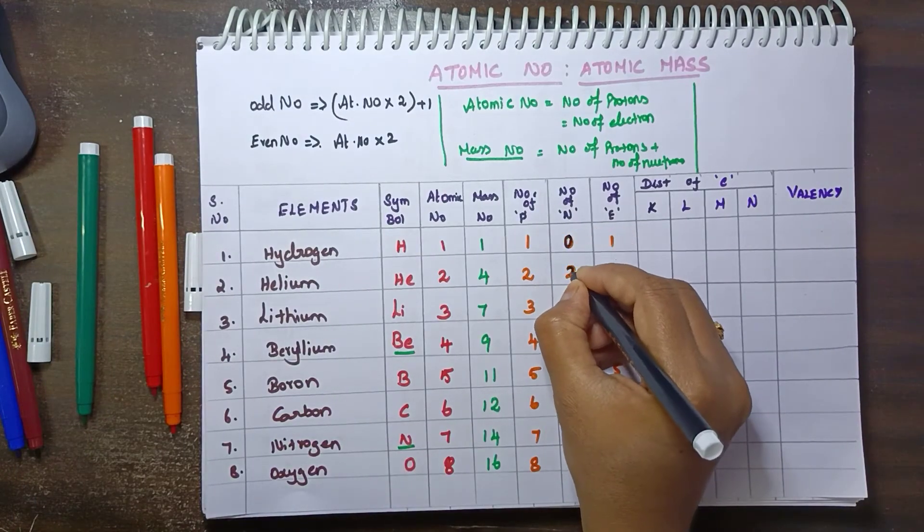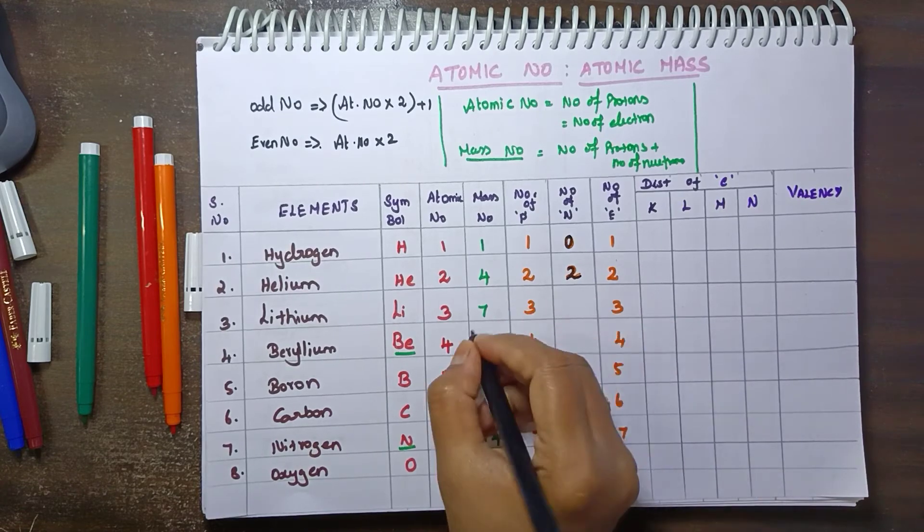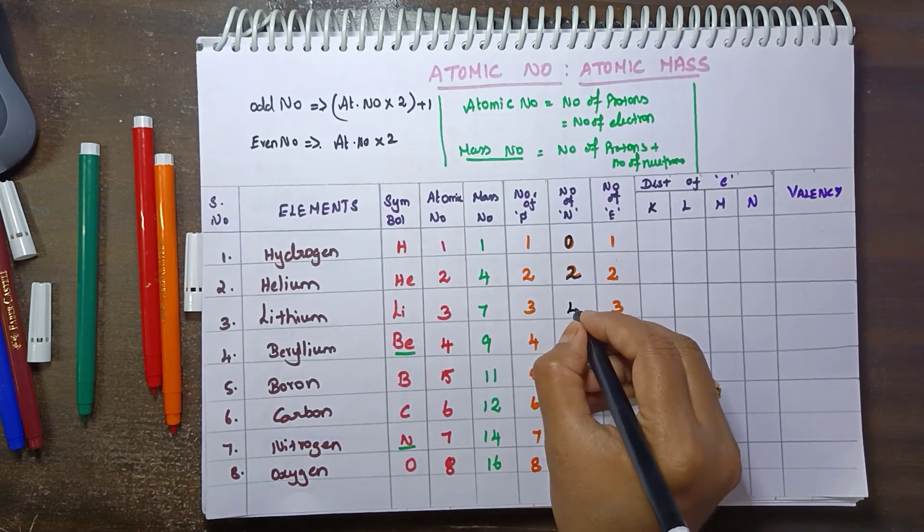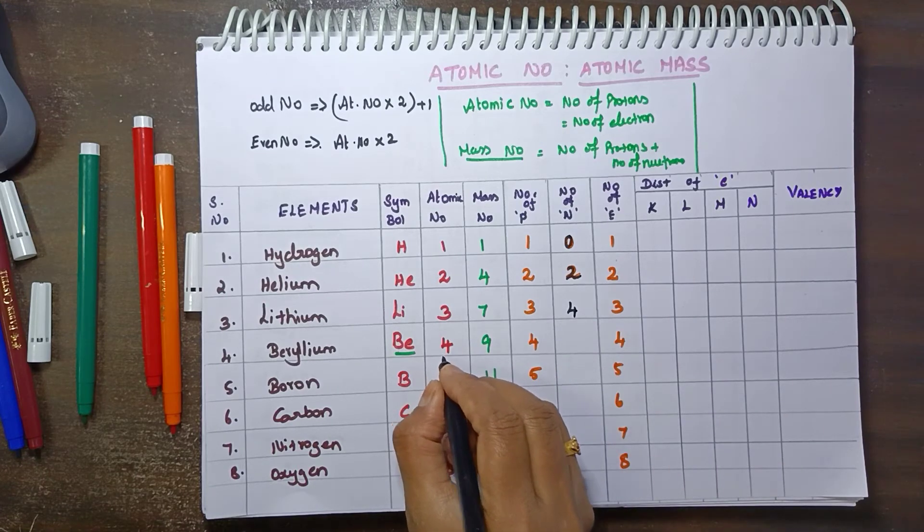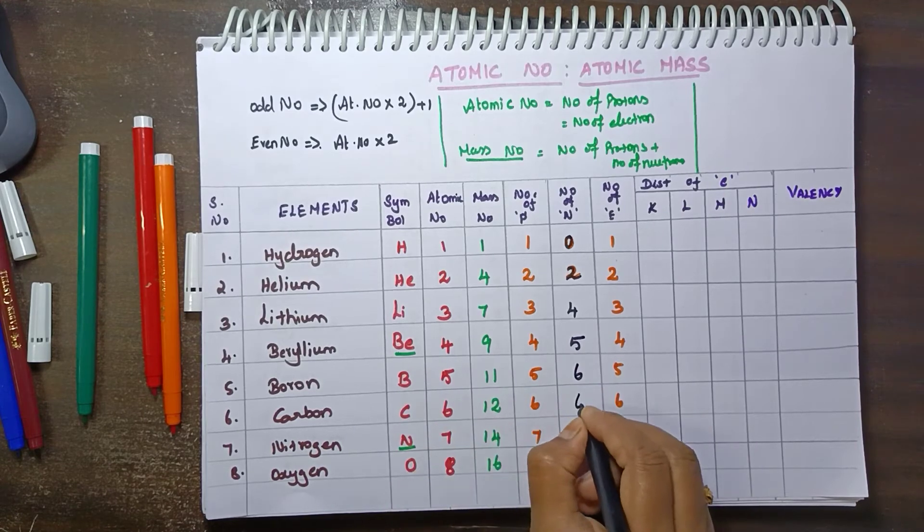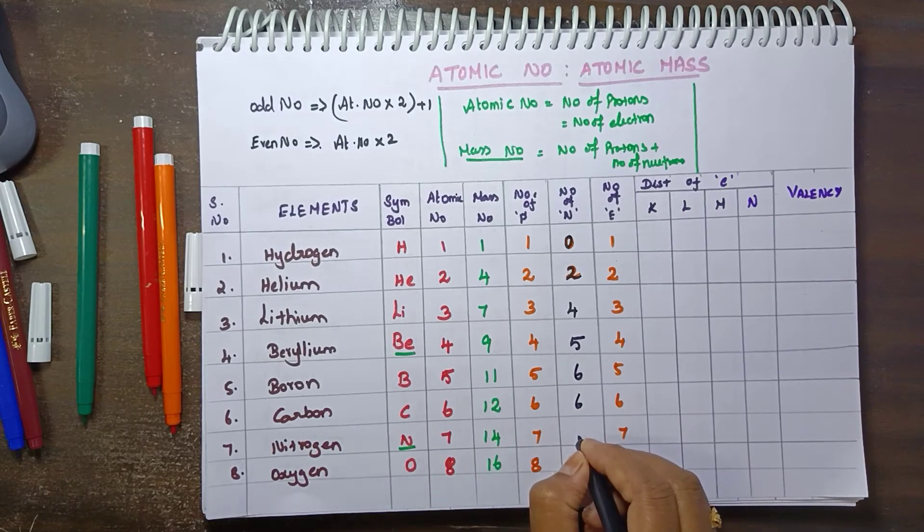Okay, see 7 mass number, atomic number 3, 7 minus 3 equals 4. Next 9 minus 4 equals 5, and then 11 minus 5 equals 6, 12 minus 6 equals 6, 14 minus 7 equals 7, 16 minus 8 equals 8.